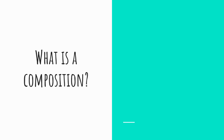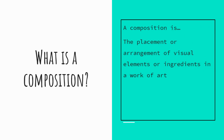First, what is composition? Composition is one of those words that gets thrown around in a lot of art classes. What does it actually mean? Well, it refers to the replacement or arrangement of the visual elements in a work of art. Basically, you want to arrange your objects in such a way that it creates an interesting composition.